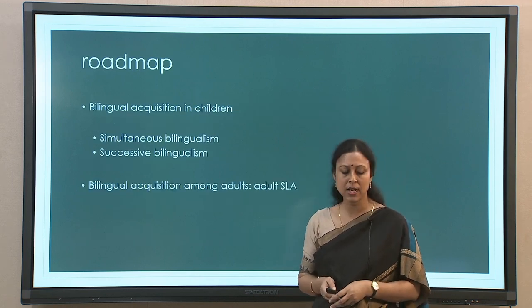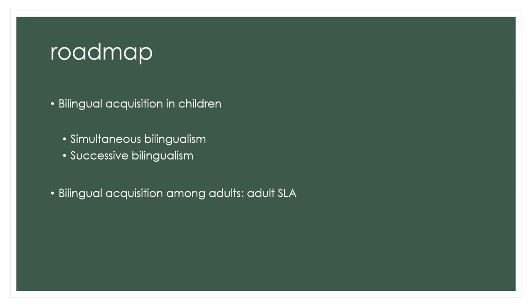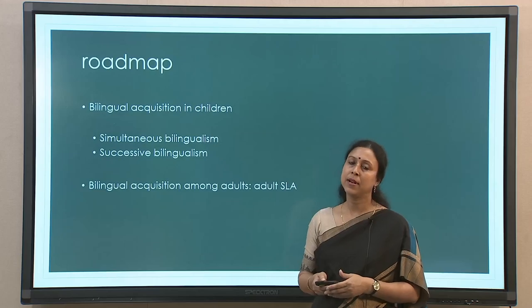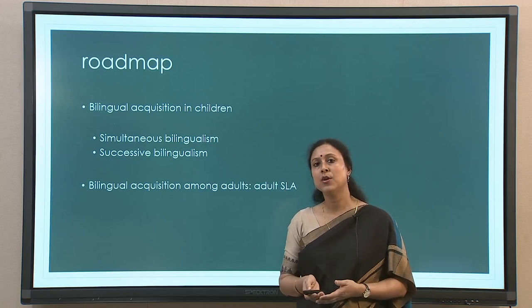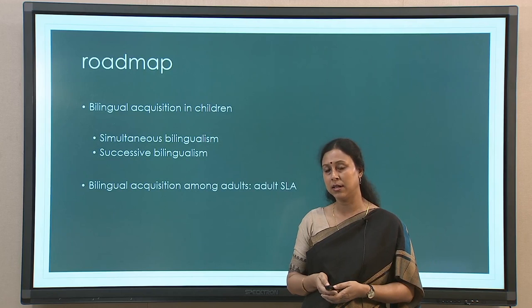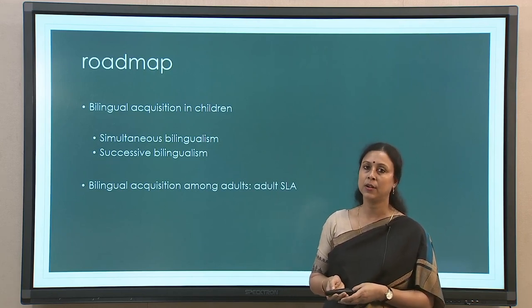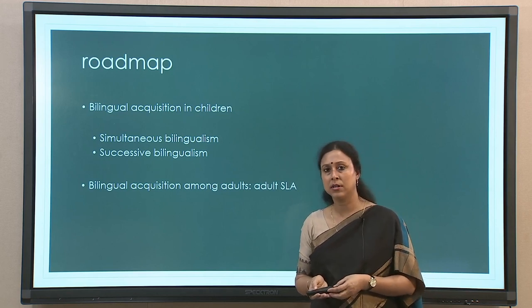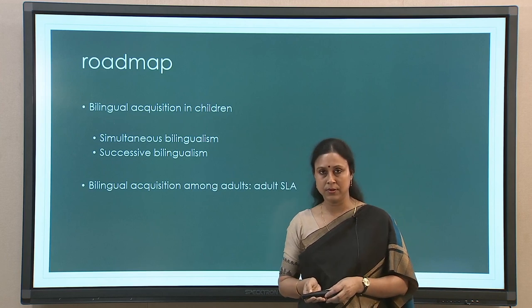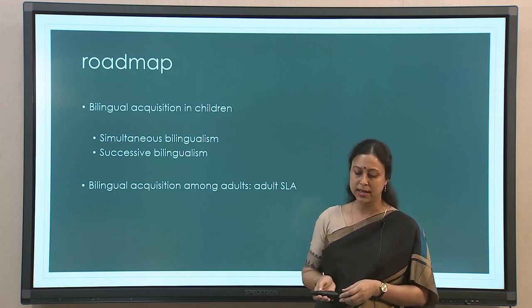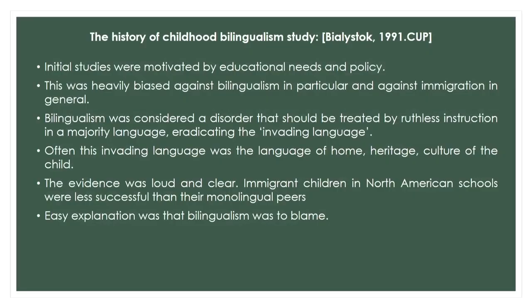Let us start with where it all starts — meaning how languages are acquired, how two languages are acquired, bilingual acquisition so to say. When you talk about bilingual acquisition there are primarily two types: there are children and there are adults. Children who learn two languages from their early childhood, and on the other hand you have bilingual adults who learn their second language later in life. These are the very broad divisions on the basis of the age of acquisition of the second language.